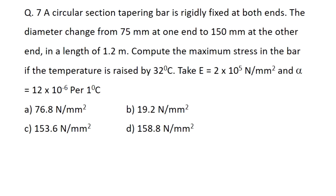The next question says: a circular section tapered bar is rigidly fixed at both ends. The diameter changes from 75 mm at one end to 150 mm at the other end over a length of 1.2 meters. If the temperature is raised by 32 degrees centigrade, find the maximum stress induced in the bar. Take E as 200 GPa and alpha as 12 × 10⁻⁶ per degree centigrade.